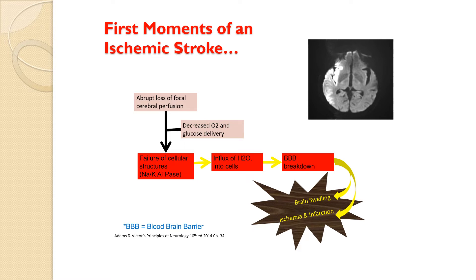The first moments of an ischemic stroke involve abrupt loss of focal cerebral perfusion. We need perfusion for aerobic metabolism, and with decreased O2 and glucose delivery, we can't run our brain cells — we lose the sodium-potassium pump, and swelling occurs. We're going to have breakdown of the blood-brain barrier (BBB), resulting in swelling, ischemia, and infarction. Remember, the brain is encased in the skull — there isn't much room for swelling, so if it swells too much, we get dangerous movement.